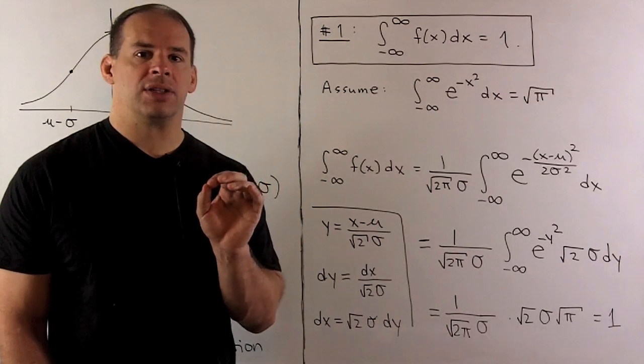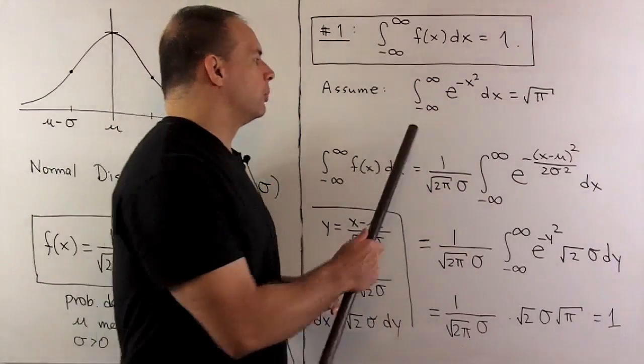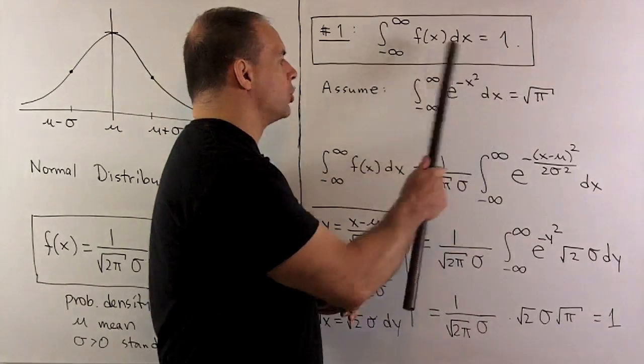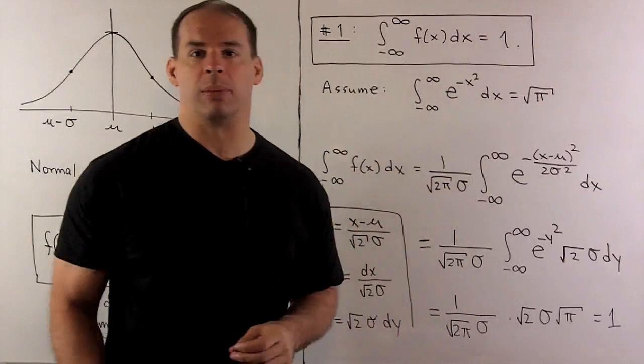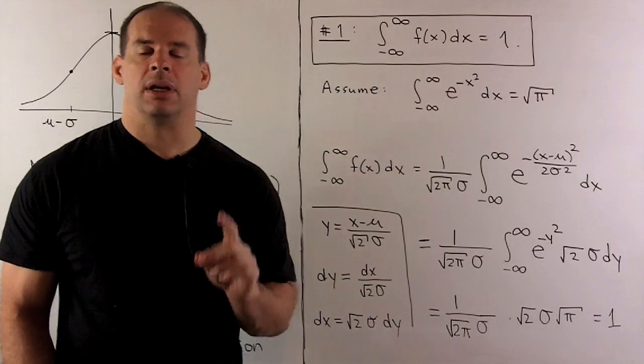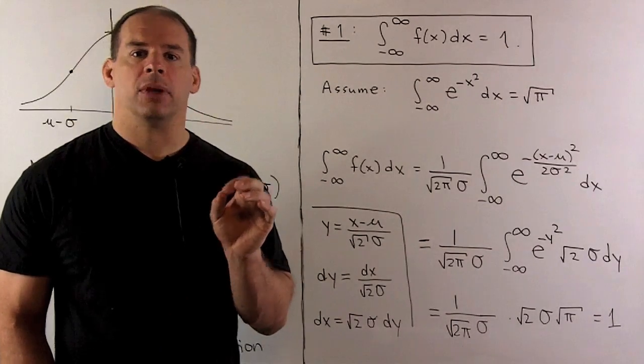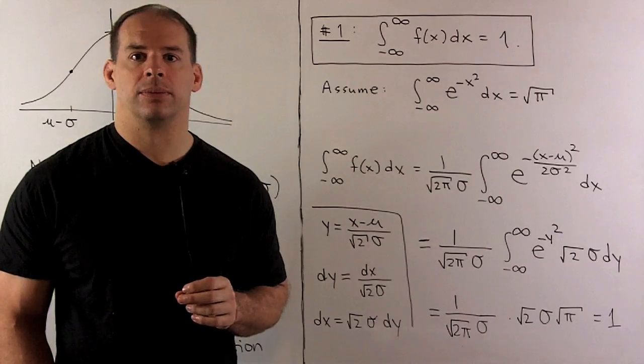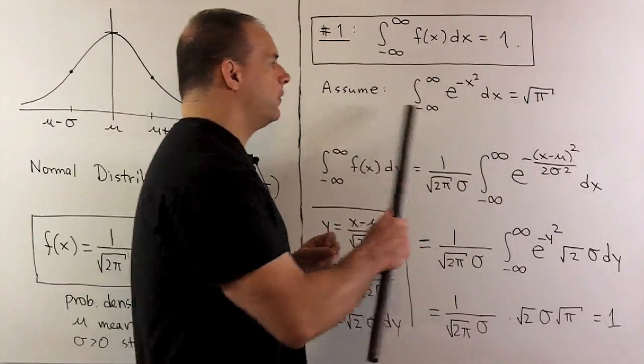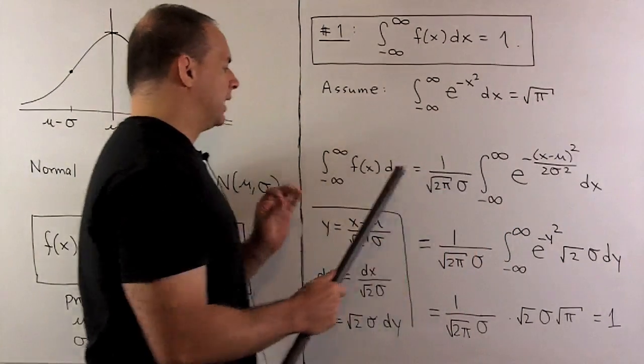Now, if you just want to believe this, you can go to your computer, compute Riemann sum over some large range of real numbers, and then you'll see that it approximates square root of π. If you want to see this exactly, we need multivariable calculus, and there's a video for that. Now, with this, we calculate.